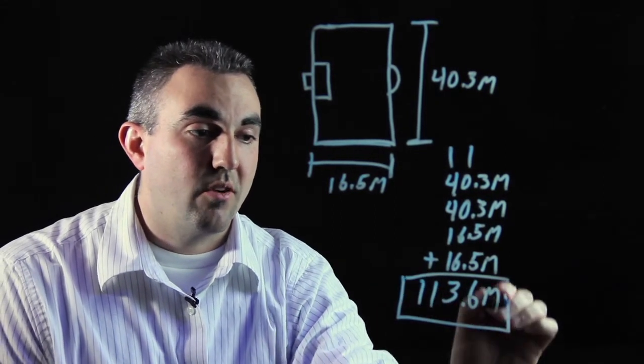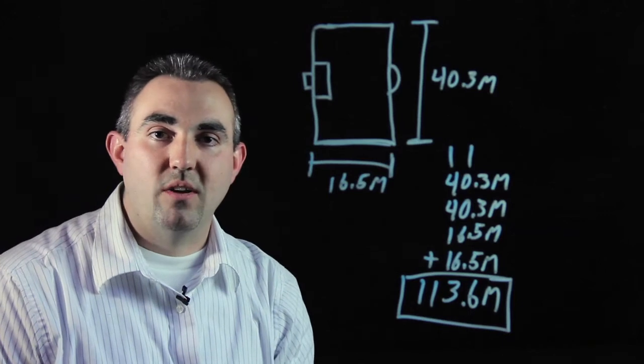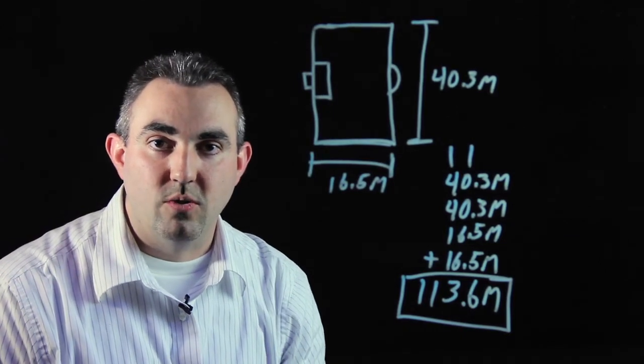So, our perimeter for our soccer penalty box is 113.6 meters. I'm Tom Ruiz. You do the math.